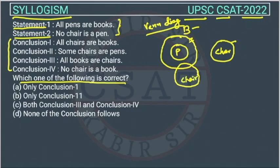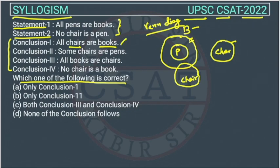Now we check each conclusion. Conclusion 1: all chairs are books. Since we don't know the definite relationship between books and chair — both overlap and non-overlap are possible — we cannot conclude that all chairs are books. This conclusion is wrong.